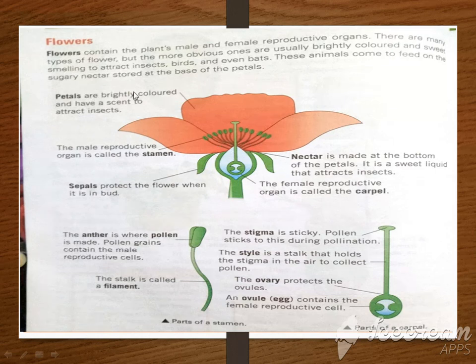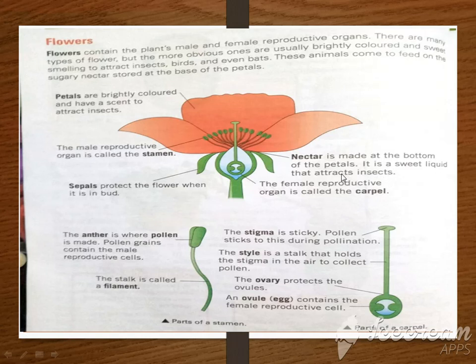As you can see in this picture, the petals are brightly colored. The male reproductive organ is called the stamen. This region is called the stamen — the first part is called the filament, and the other part is called the anther. Nectar is made at the bottom; it is a sweet liquid that attracts insects.